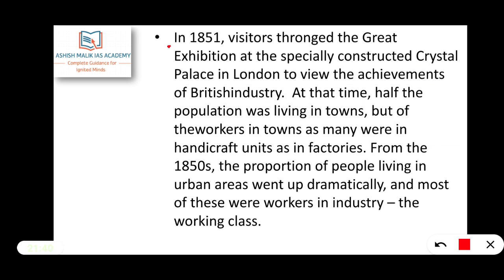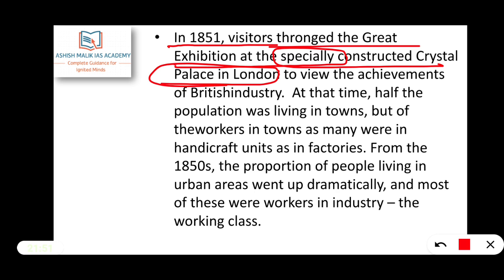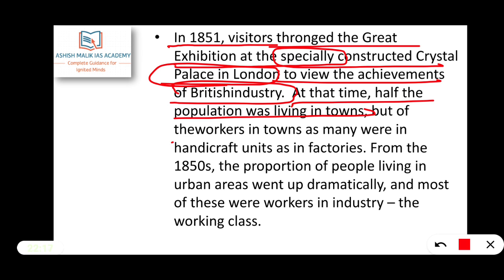In 1851, visitors thronged the Great Exhibition at the specially constructed Crystal Palace in London to view the achievements of British industry. At that time, half of the population was living in towns, but of the workers in towns, as many were in handicraft units as in the factories.